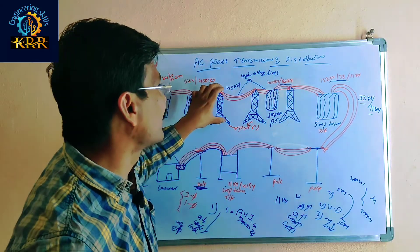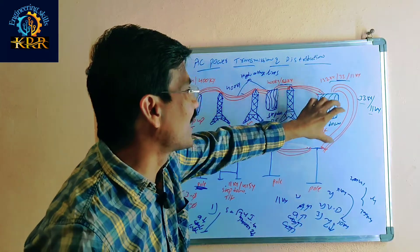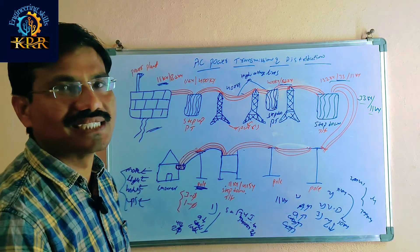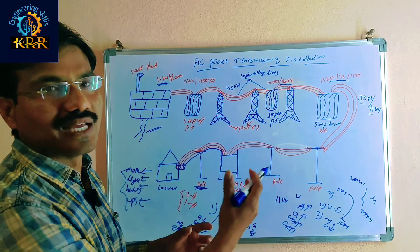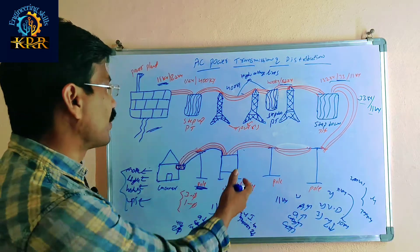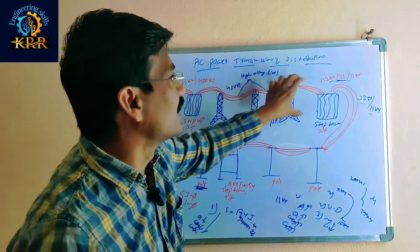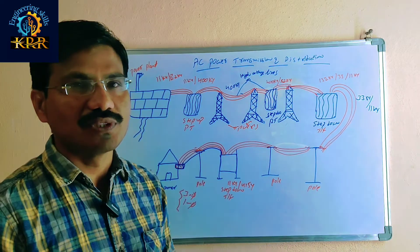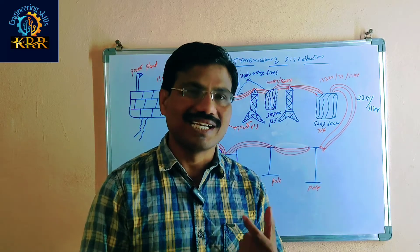With less losses, you get more efficiency. That is why we use transformation — converting to high voltage, transmitting, then distributing. We step up at the primary end and step down at the secondary end. These are the advantages of using transmission and distribution lines.